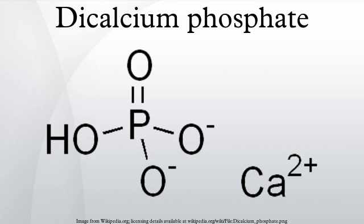Dicalcium phosphate, also known as dibasic calcium phosphate or calcium monohydrogen phosphate, is a type of calcium phosphate that is dibasic.